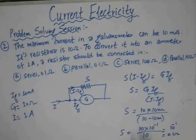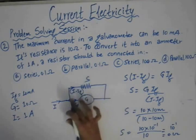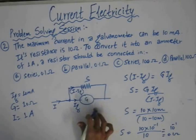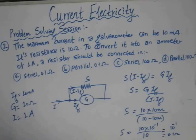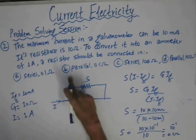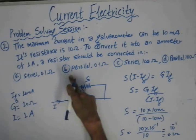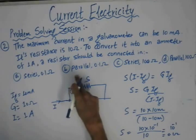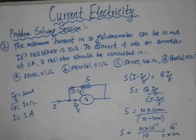The shunt resistor of 0.1 Ohm should be connected in parallel to convert the galvanometer into an ammeter. So the correct answer is to connect the resistor in parallel with a value of 0.1 Ohm.